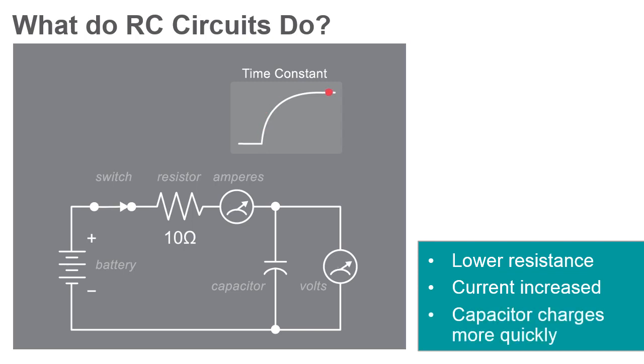RC circuits can be used to filter a signal by blocking certain frequencies and passing others. The two most common RC filters are the high-pass filters and low-pass filters.